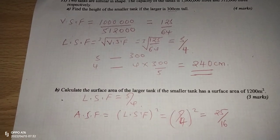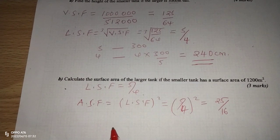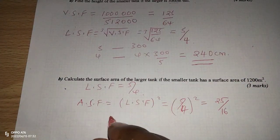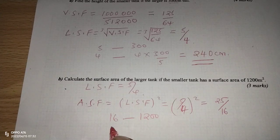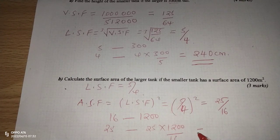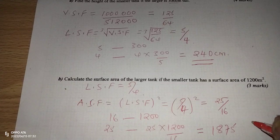With the area scale factor we can obtain the area of the unknown tank. The smaller tank corresponds to 16 and has a surface area of 1,200 square meters, so the larger tank corresponds to 25. We calculate 25 multiplied by 1,200 divided by 16, which gives us 1,875 square meters.